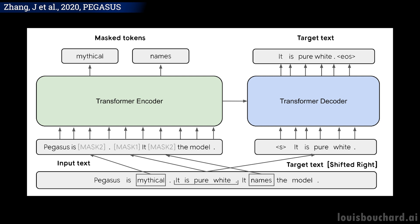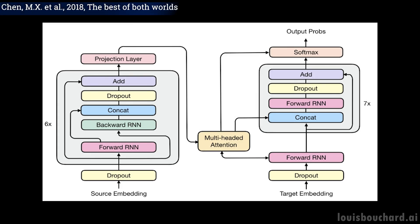GPT-3 works well for small inputs like question answering tasks, but the same architecture won't be able to process whole books efficiently. Instead, they had to use some tricks in order to have a smaller and more efficient model while keeping high-quality results. This optimization was achieved by merging transformers with RNNs, or recurrent neural networks — two concepts I explained in previous videos that I highly recommend watching for a better understanding. Both videos are linked in the description below.